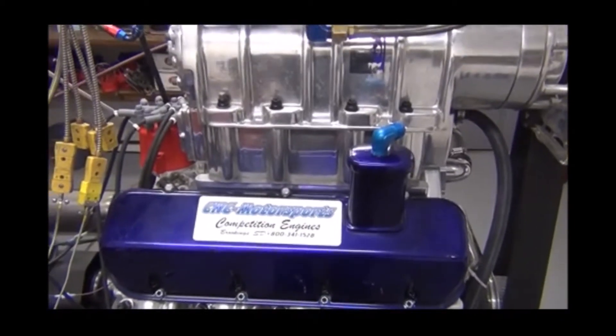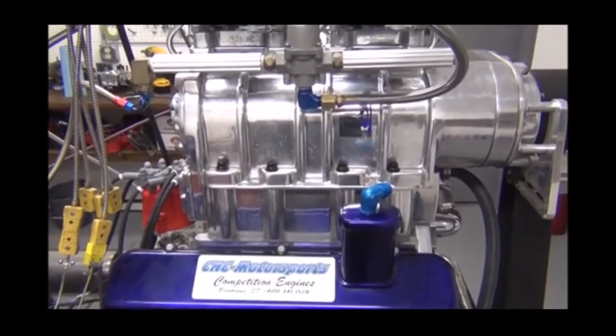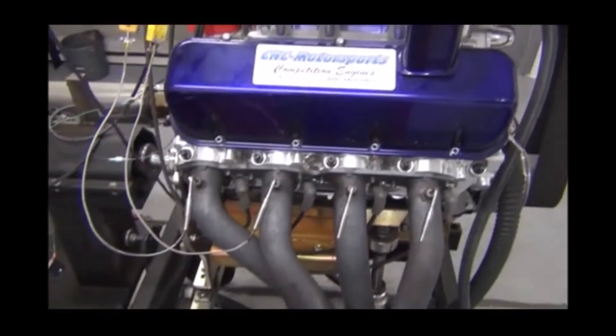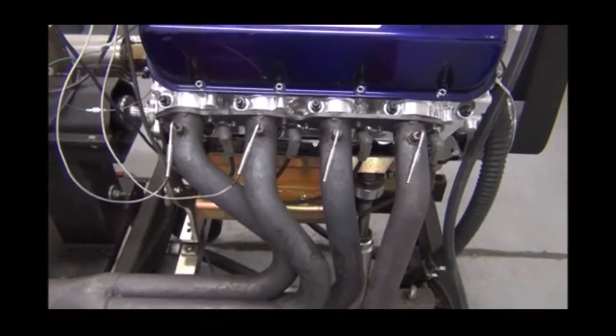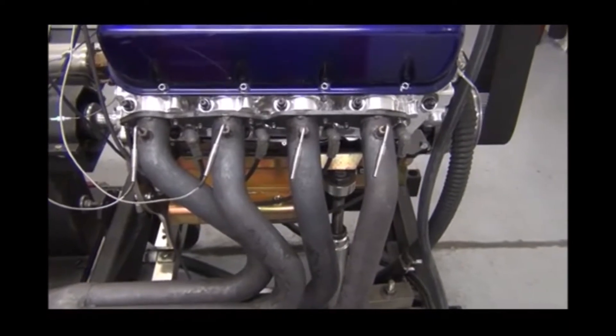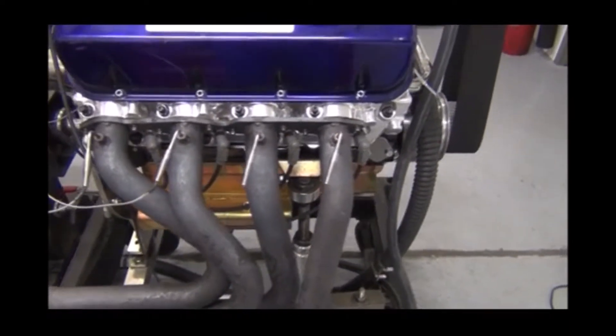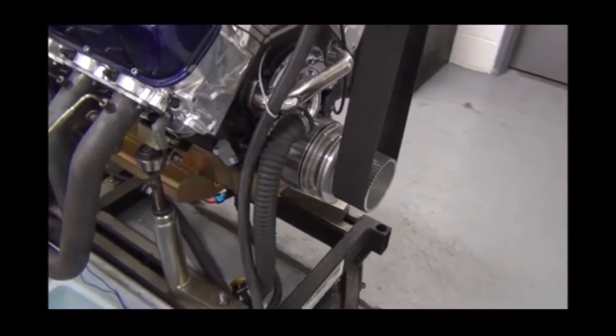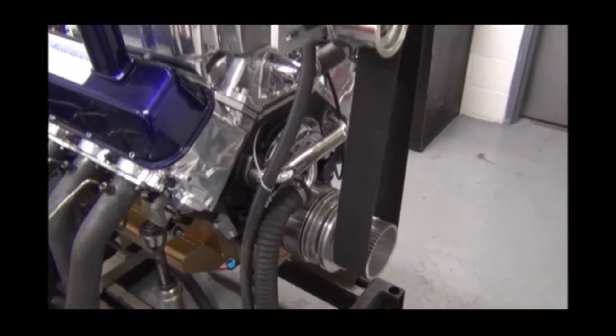All right, what we have on the dyno here today is a 598 cubic inch big block Chevrolet marine motor. This motor came to us from Mike's Marine Repair. Mike's got a repair shop out of Michigan and Florida. He does a lot of boat repair and just purchased a boat which actually had this engine in it.